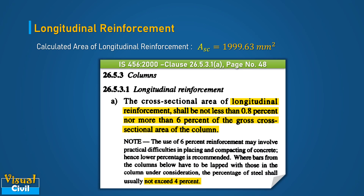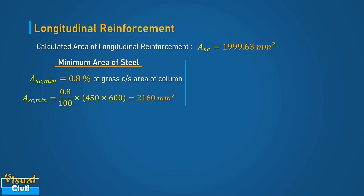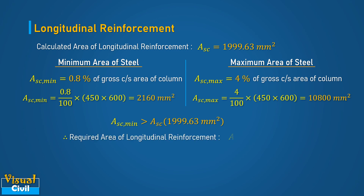As per Clause 26.5.3.1, the minimum longitudinal reinforcement should be 0.8% of the gross cross-sectional area, while the maximum is 6% (taken as 4% for practical purposes). Calculating, the minimum area of steel equals 2160 mm² and the maximum equals 10800 mm². Since the minimum area required is more than the calculated value of 1999.63 mm², the required area of longitudinal reinforcement is taken as 2160 mm².